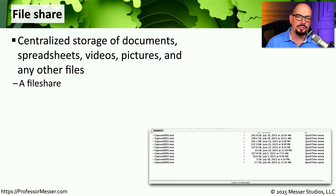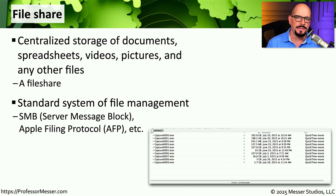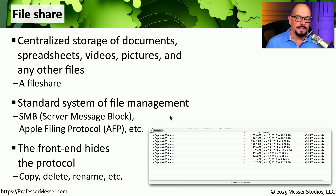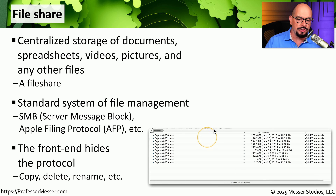File sharing provides a way to centrally store information so that you and others in the organization can easily access it — great for sharing spreadsheets, documents, and anything else you need to share inside or outside your organization. There are different file sharing standards depending on your environment: Windows environments commonly use SMB, or Server Message Block, while Mac OS environments use Apple Filing Protocol. Most of the time the operating system hides these protocols, so all you see is a file management front end where you can drag, drop, rename, and modify files stored in that folder.